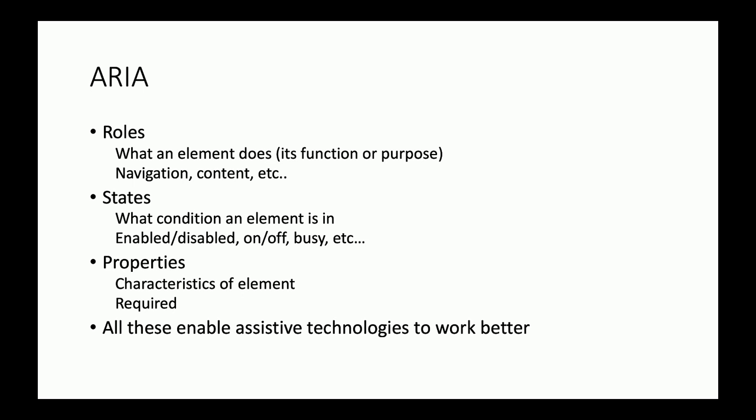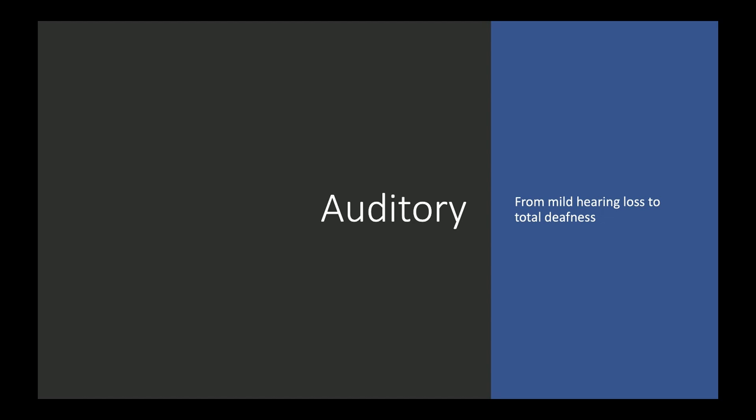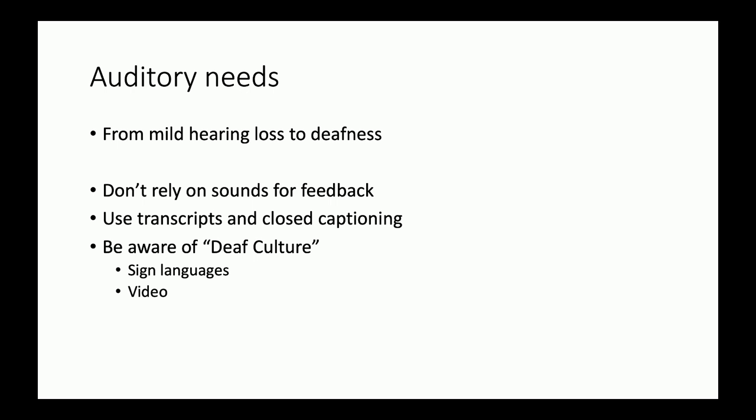You'll see a few ARIA attributes in the templates for ASP.NET Core Razor Pages projects. The next three categories — auditory, motor, and cognitive — involve less coding but require awareness of who is accessing your software. Auditory covers mild hearing loss to total deafness.